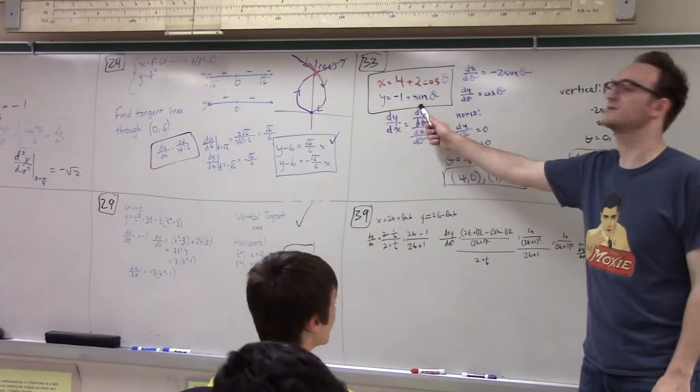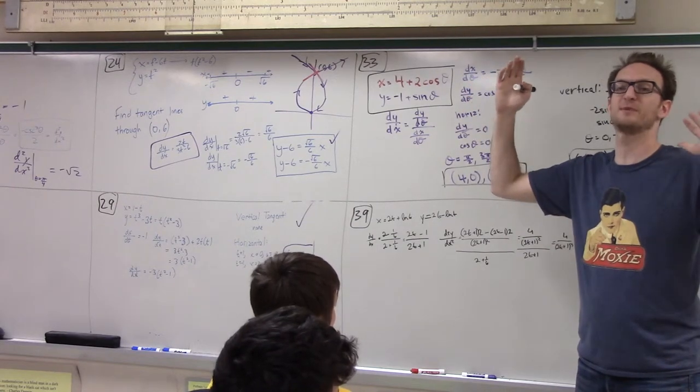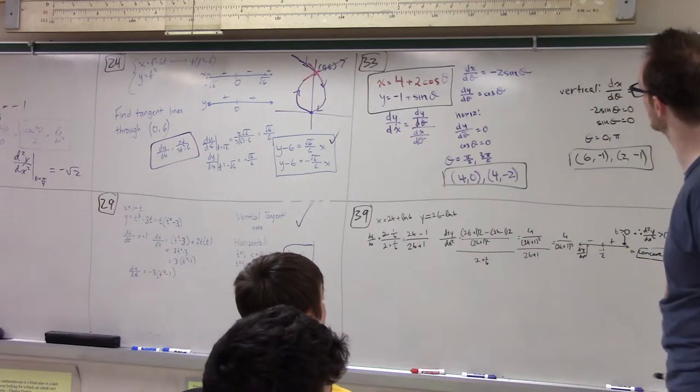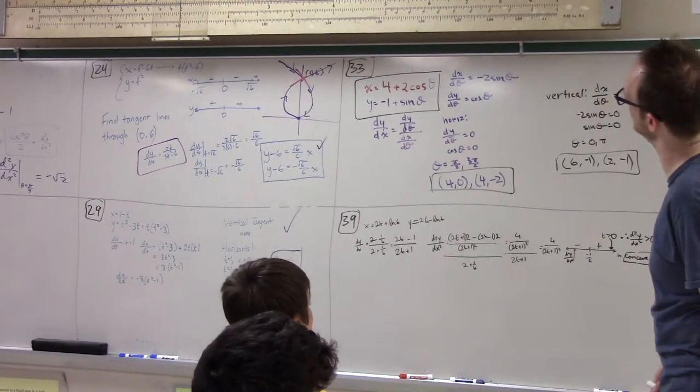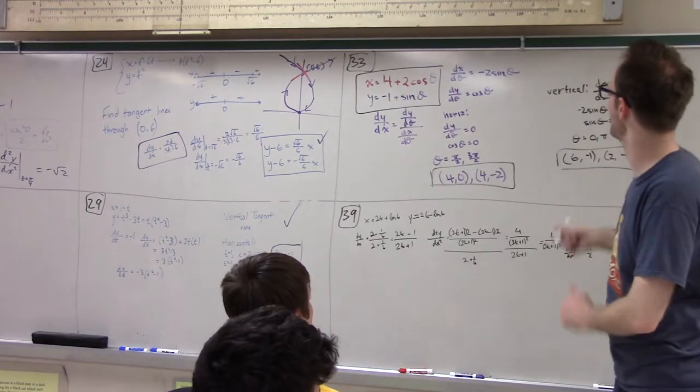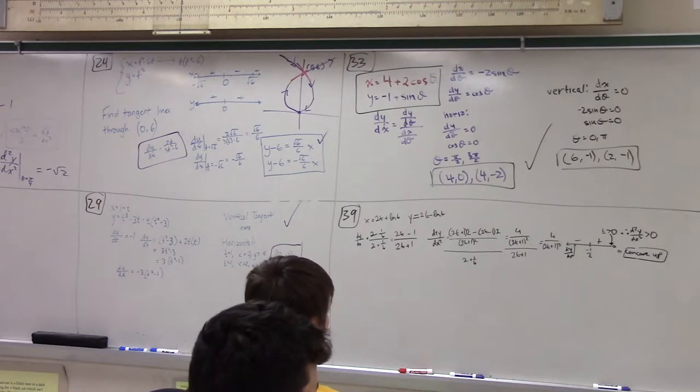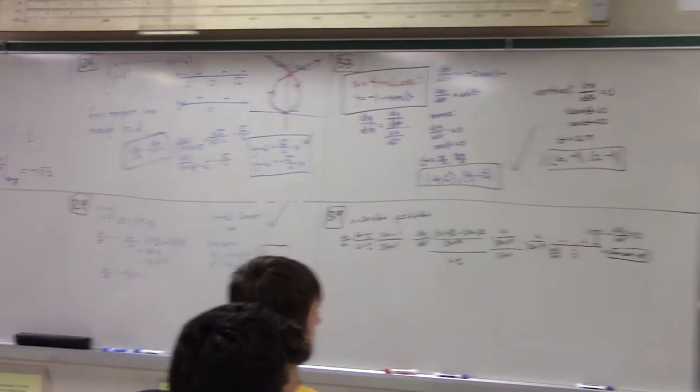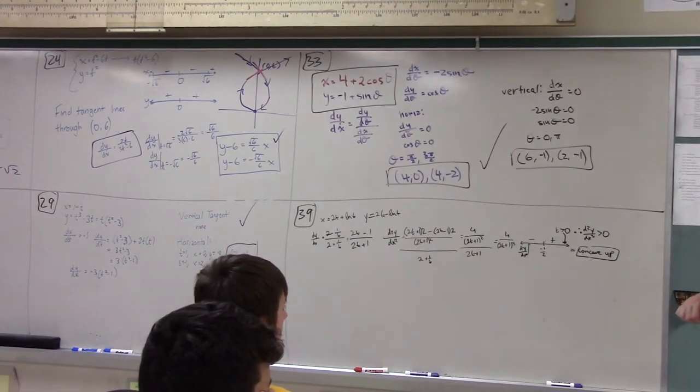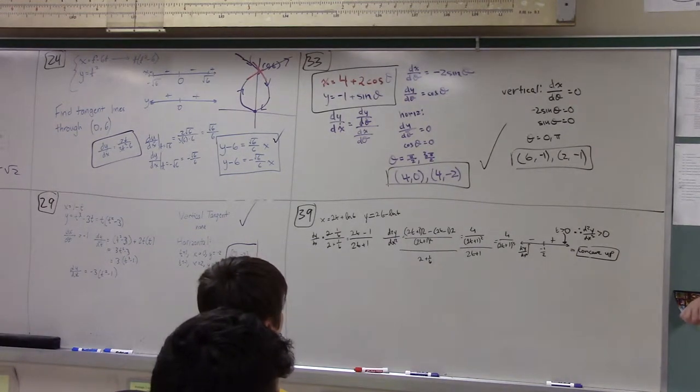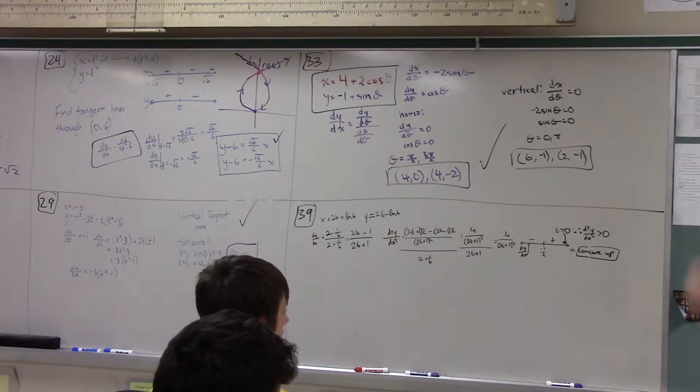Anyway, the point is that since this is an ellipse, we should definitely expect there to be two vertical tangents and two horizontal tangents at symmetric places. That is indeed what turns out to be the case once you do the appropriate math. Any questions about that? 39, can we just be done with this? Oh, except I think this is wrong.